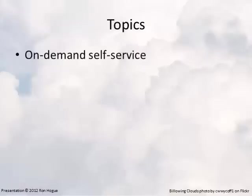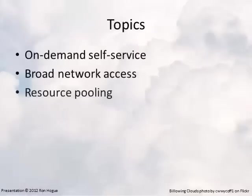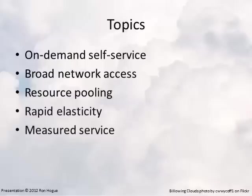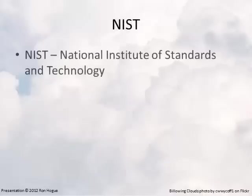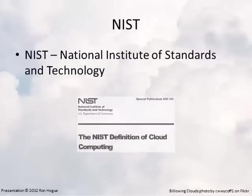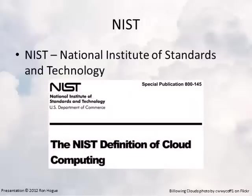I want to look at five topics: on-demand self-service, broad network access, resource pooling, rapid elasticity, and measured service. If you don't know what any of these are, don't worry — we'll cover each of these in detail. These five topics came from NIST, the National Institute of Standards and Technology, who created a special publication explaining these five ideas, but I want to put them in more common terms so that they're more easily understood.